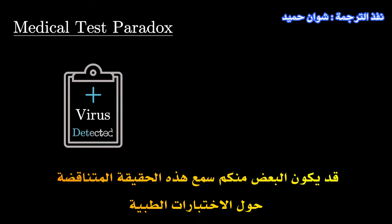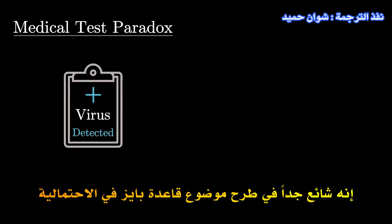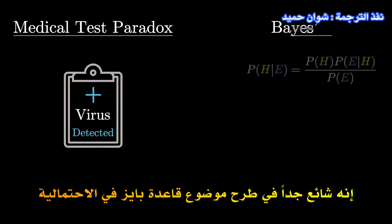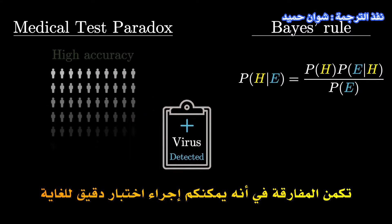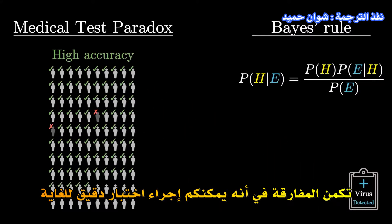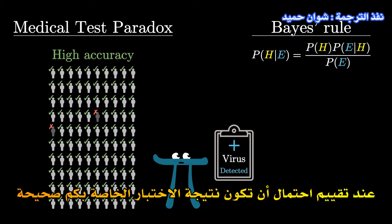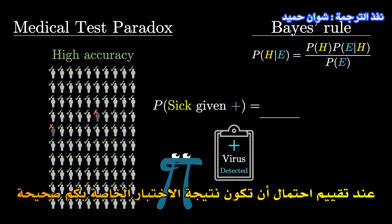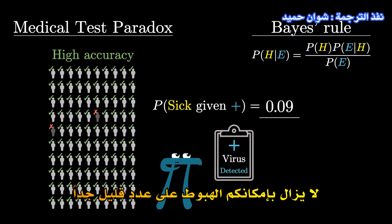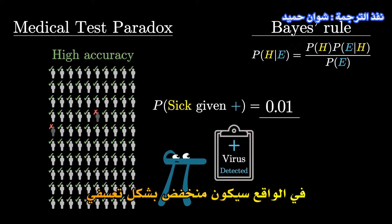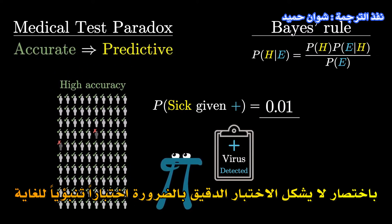Some of you may have heard this paradoxical fact about medical tests. It's very commonly used to introduce the topic of Bayes' rule in probability. The paradox is that you could take a test which is highly accurate in the sense that it gives correct results to a large majority of the people taking it, and yet, under the right circumstances, when assessing the probability that your particular test result is correct, you can still land on a very low number — arbitrarily low, in fact. In short, an accurate test is not necessarily a very predictive test.